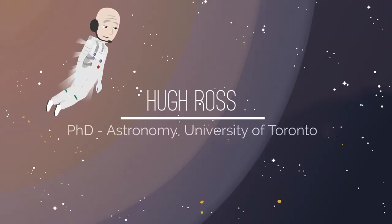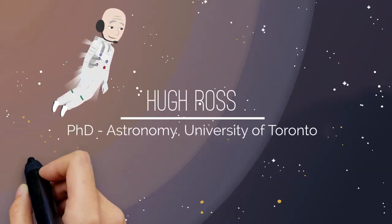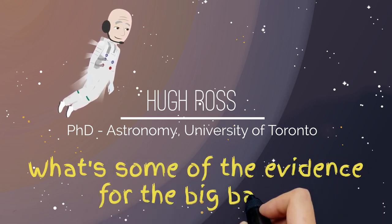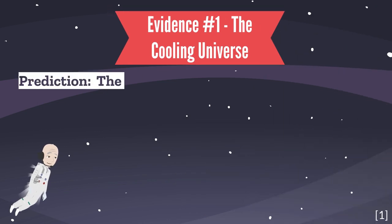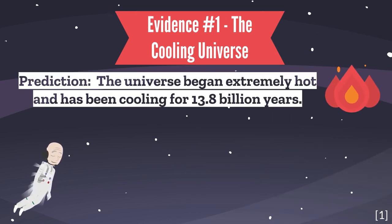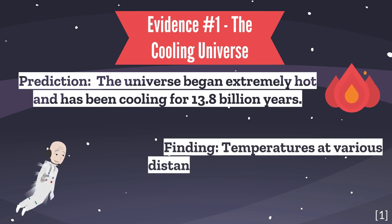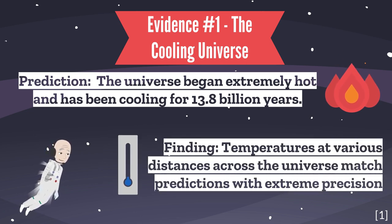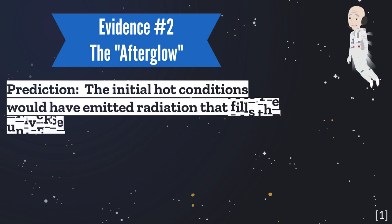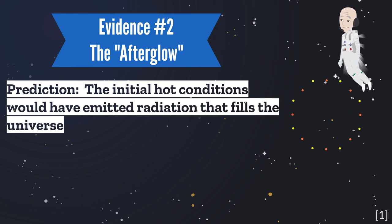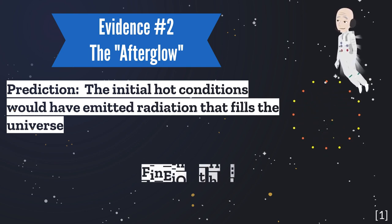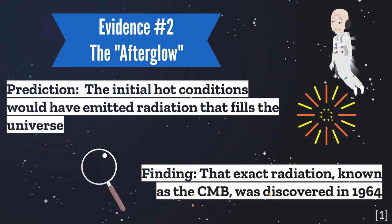Hugh Ross is an astronomer who will help us understand what some of the evidence is for the Big Bang. The Big Bang predicts an extremely hot early universe which has been cooling ever since. Temperatures at various distances across the universe precisely match these predictions. This model also predicts that the initial hot conditions would have produced radiation everywhere we look in the universe. Scientists confirmed the existence of this radiation in 1964.